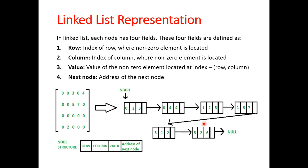The second representation is linked list representation. It also stores a row index, column index, and value. Apart from that, in a linked list, we have a fourth field in the form of a next node pointer, which stores the address of the next node. Each node holds information related to one non-zero element. So the first block contains the row index, the second is the column index, the third is the value itself, and the fourth holds the address of the next node.